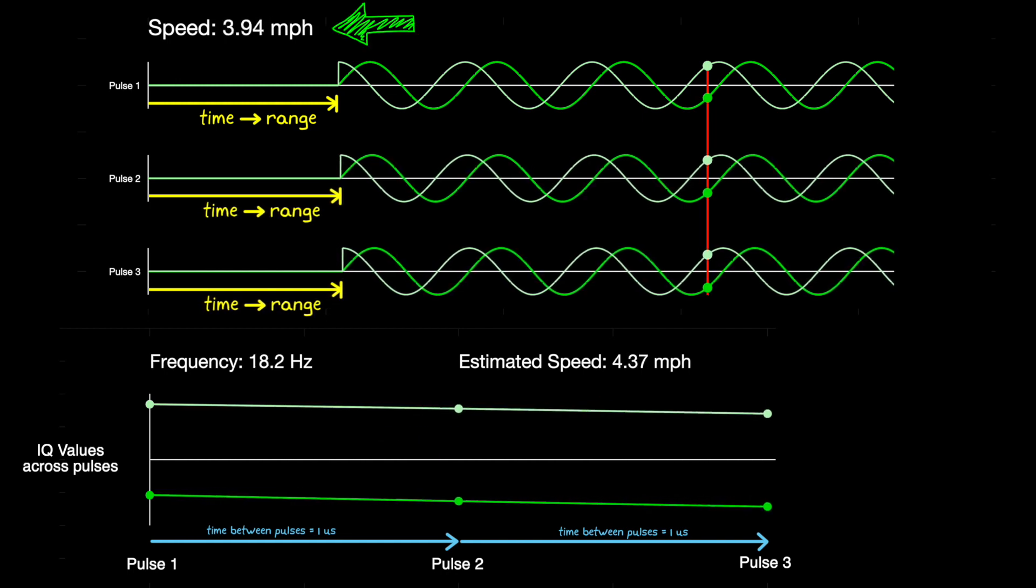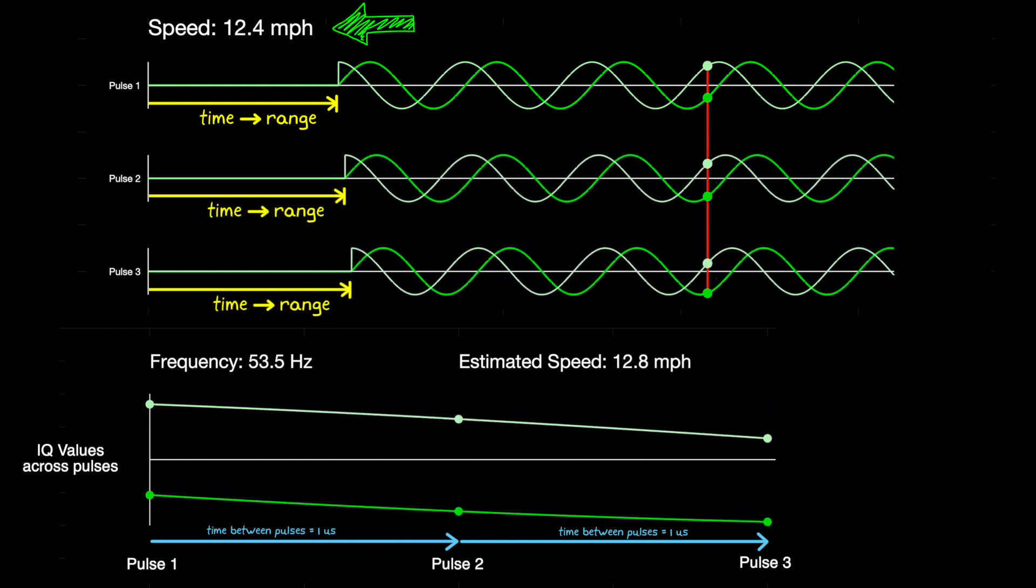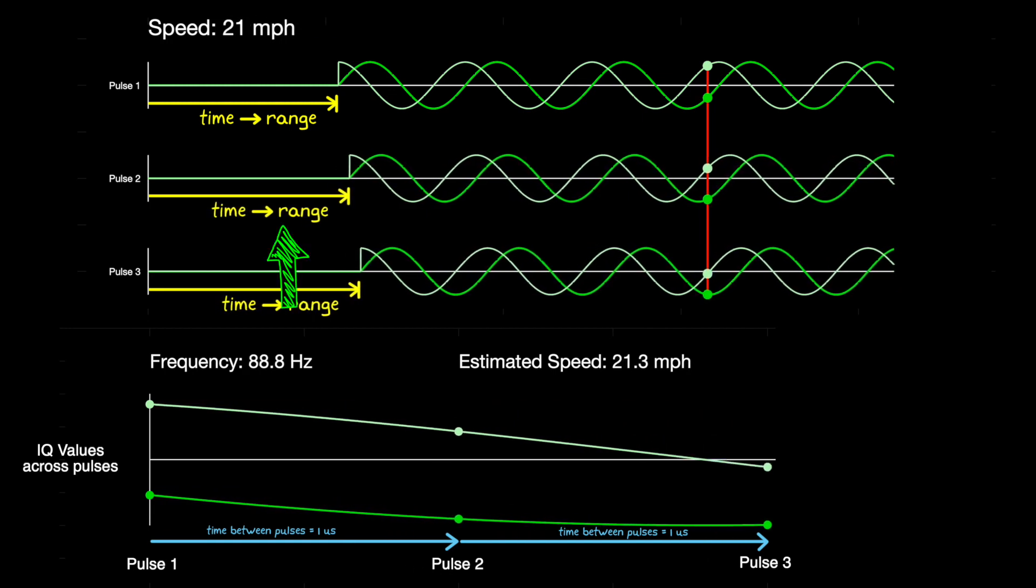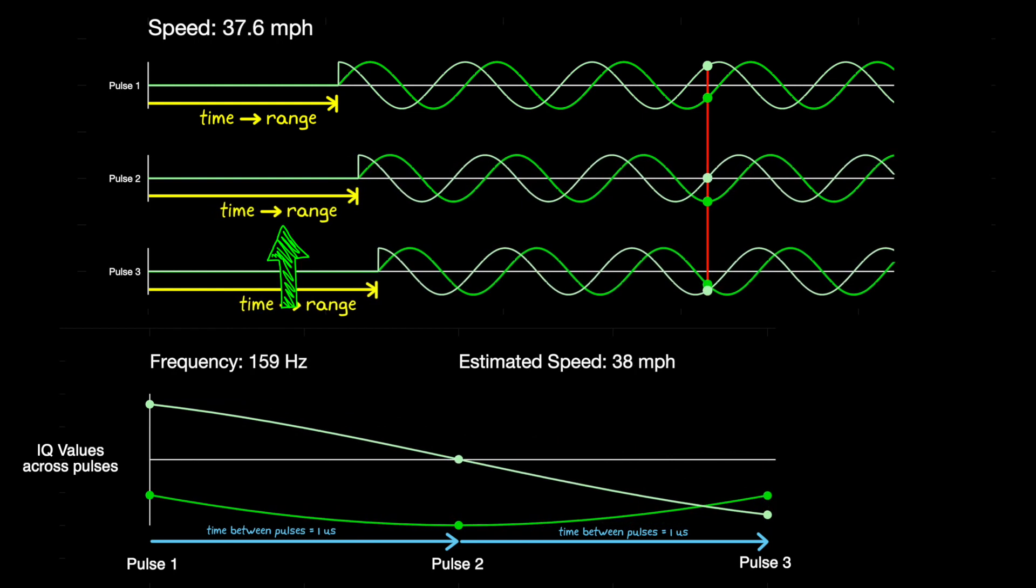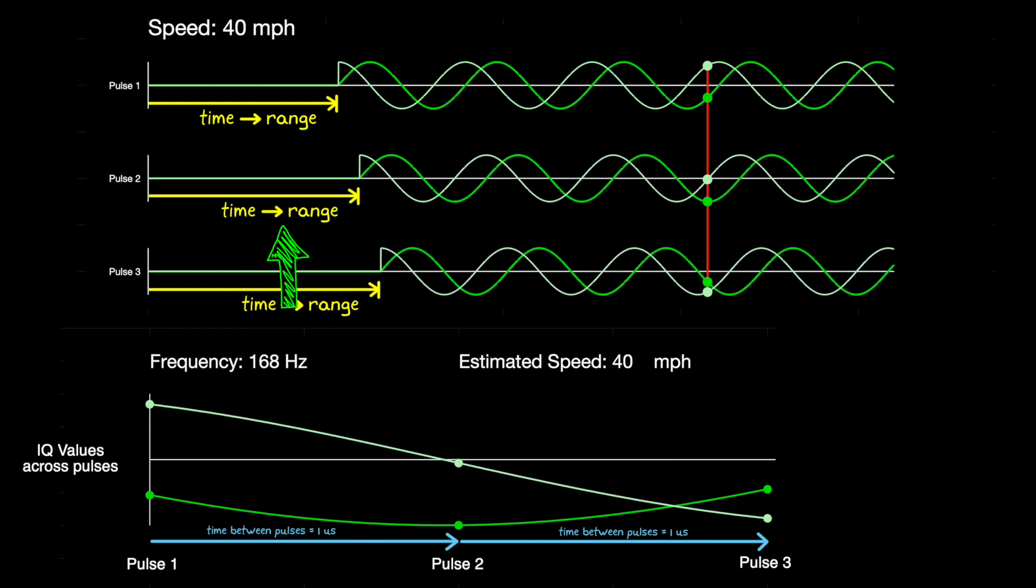However, let's think about what happens if the object is moving away from the radar. In that case, the object will be a little further away for the second pulse than it was for the first, and therefore the second pulse takes a little bit longer to return to the radar.